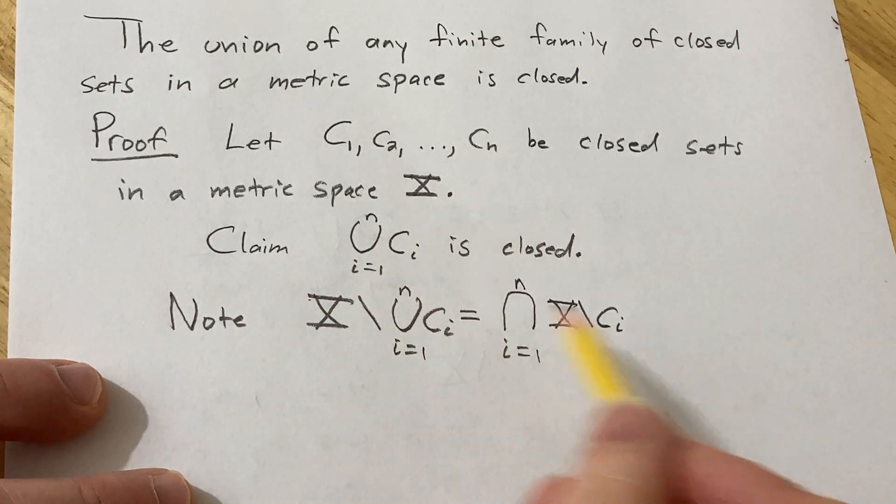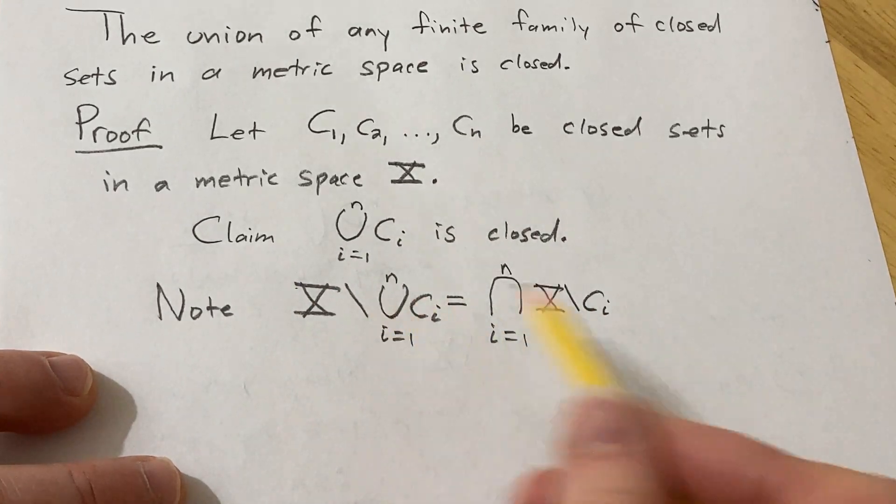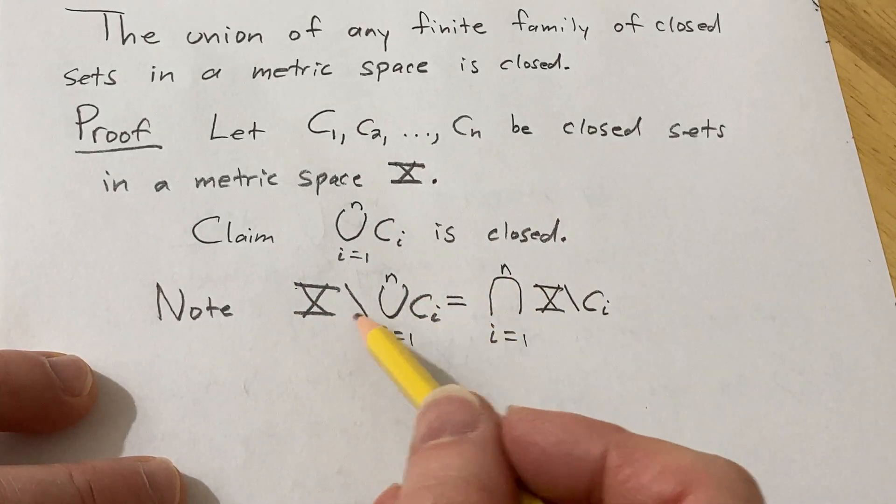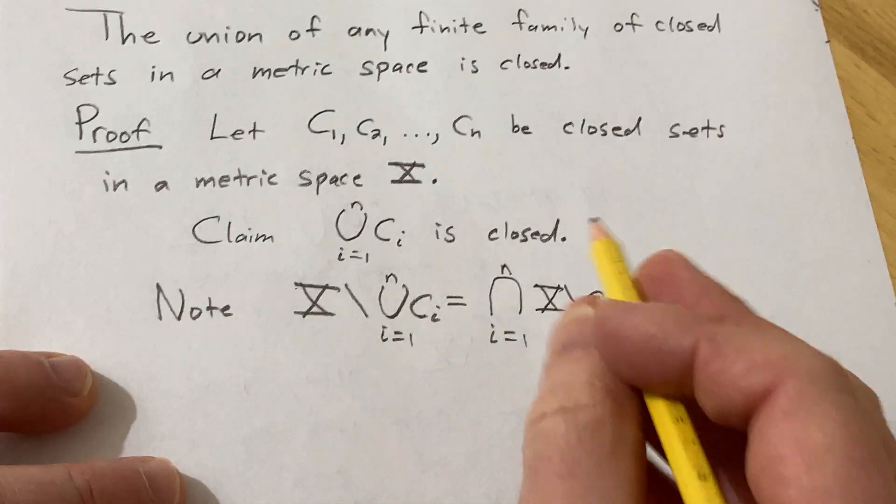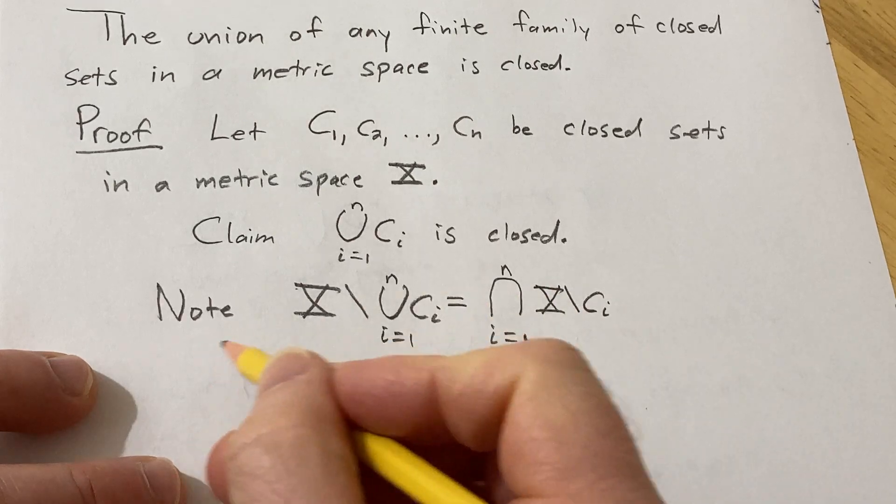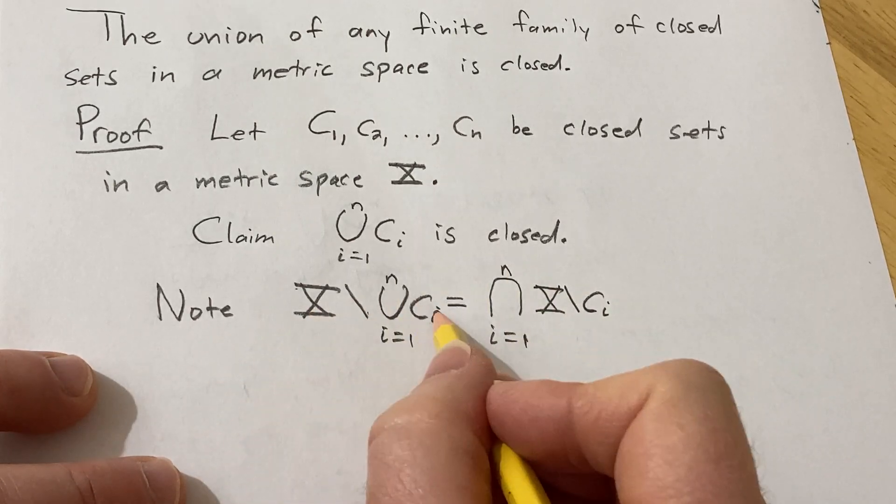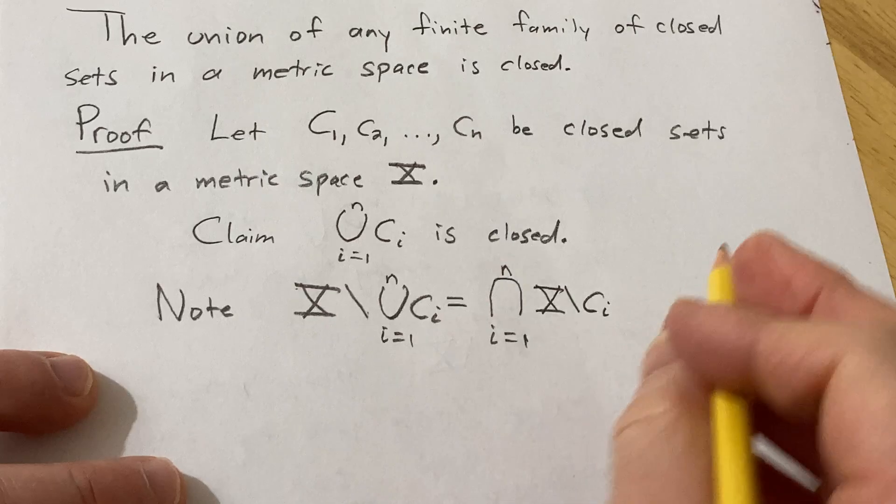So this is something that is just totally worth memorizing and it's really not hard to prove. This is just a set theoretic identity, and it comes up a lot when you're studying topology. So worth knowing. If you have X set minus the union, it becomes an intersection and then you get the X on the inside.